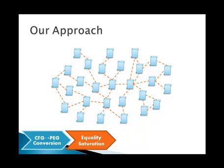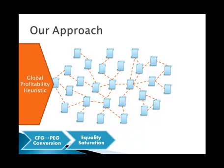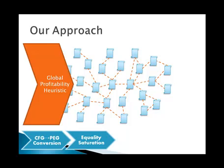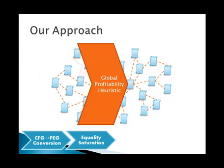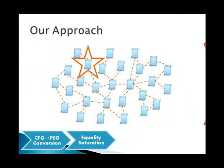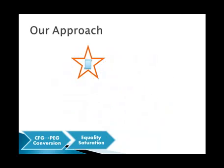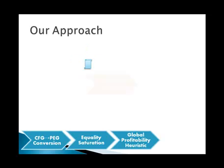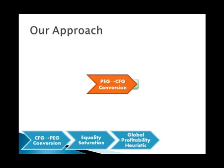After exploring equivalent programs, we need to determine which of the versions we found is the best. For this, we use our global profitability heuristic, which analyzes the space we explored and selects what it thinks is the best version. Once we have a selection, we convert our selected PEG back into a control flow graph. This control flow graph is the optimized result of our process.